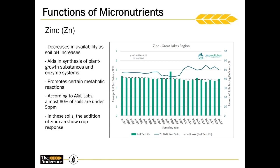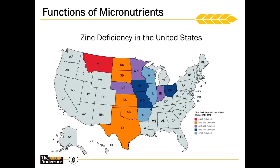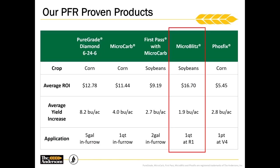Here's a map visualizing that same point — zinc deficiency is becoming increasingly common in our soils in the Midwest, so we want to mitigate the probability of a deficiency as best we can. Microblitz is also PFR proven. It was applied at the R1 growth stage on soybeans, and we had close to a two bushel per acre increase with an average return on investment of $16.70.